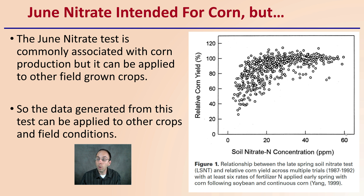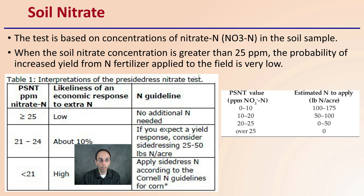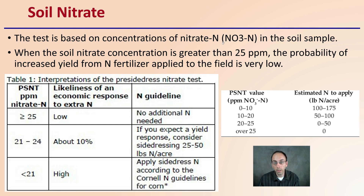Here we're seeing the soil nitrate concentration in parts per million and the relative corn yield. We see a curve where if we increase our soil nitrogen concentration much above a certain region, there's really not that much increase in relative corn yield, at least on a percentage basis. The test is based on concentrations of nitrate nitrogen, or NO3-N, in the soil sample. When the soil nitrate concentration is greater than 25 parts per million, the probability of increased yield from nitrogen fertilizer applied to the field is very low.